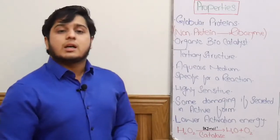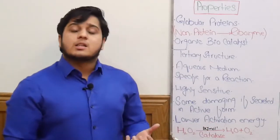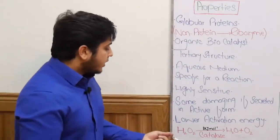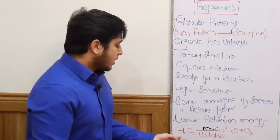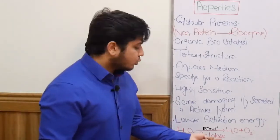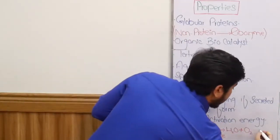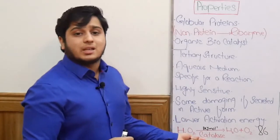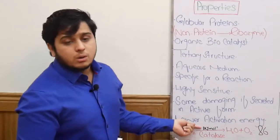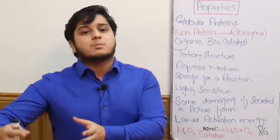Enzymes reduce the amount of energy required to start a reaction, which is known as activation energy. For example, hydrogen peroxide breakdown without catalase enzyme requires about 86 kilojoules per mole. But if we use the catalase enzyme, it is only about 1 kilojoule per mole. This means that enzymes minimize activation energy in any chemical reaction so that minimum energy is used to produce maximum product.